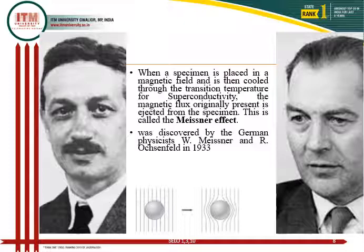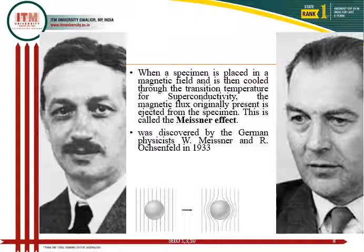When we place a superconducting specimen in a magnetic field and then cool that specimen through the transition temperature, at below transition temperature when the material gives superconducting behavior, the magnetic flux originally present in the system is now ejected from the specimen. This is called the Meissner effect. It was first discovered by the German scientists Meissner and Ochsenfeld in 1933 — Meissner shown on the left hand side and Ochsenfeld on the right.